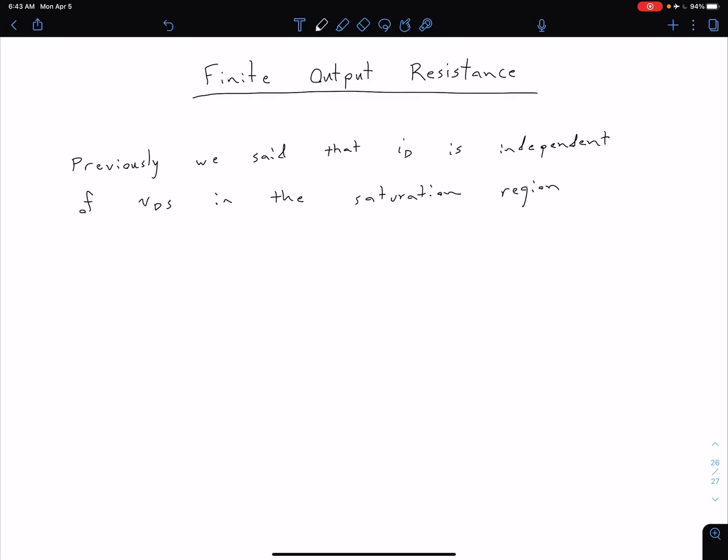Previously we had said that our ID is independent of VDS in the saturation region. Remember our saturation region is when VDS is greater than our VDS sat if we're talking about an NMOS device.